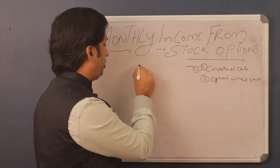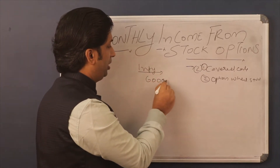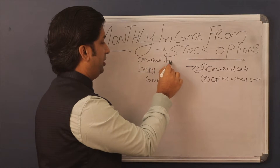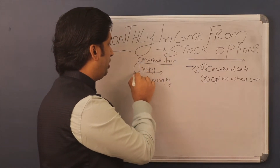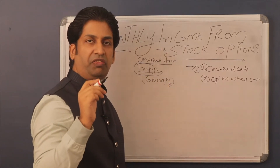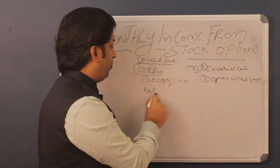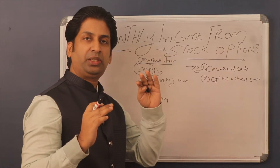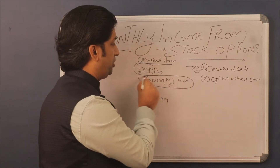For the covered call strategy, let's assume you have Infosys stock of 600 quantities. There is one rule in this strategy — you have to have 600 quantities of Infosys. The lot size of Infosys is 600. For example, if you are doing this in Reliance, you have to have 250 quantities because 250 is the lot size of Reliance. You have to hold quantities proportionate to the options lot size.